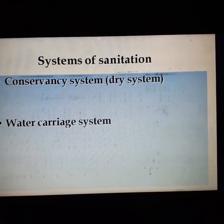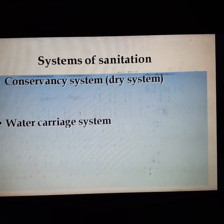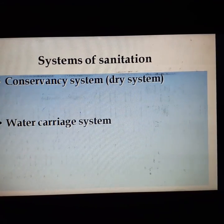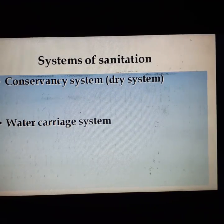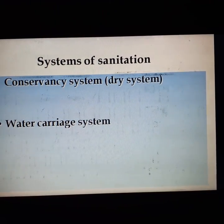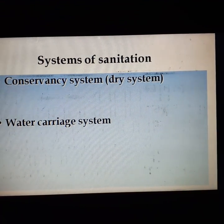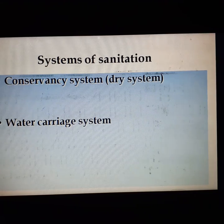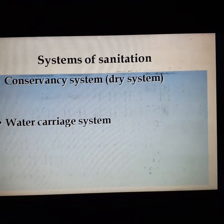Now, system of sanitation. The first is conservancy system and water carriage system. What is conservancy system or dry system? The different types of waste are manually collected separately and transported over vehicles to the outskirts of the city and disposed of by composting method — that is the conservancy system.